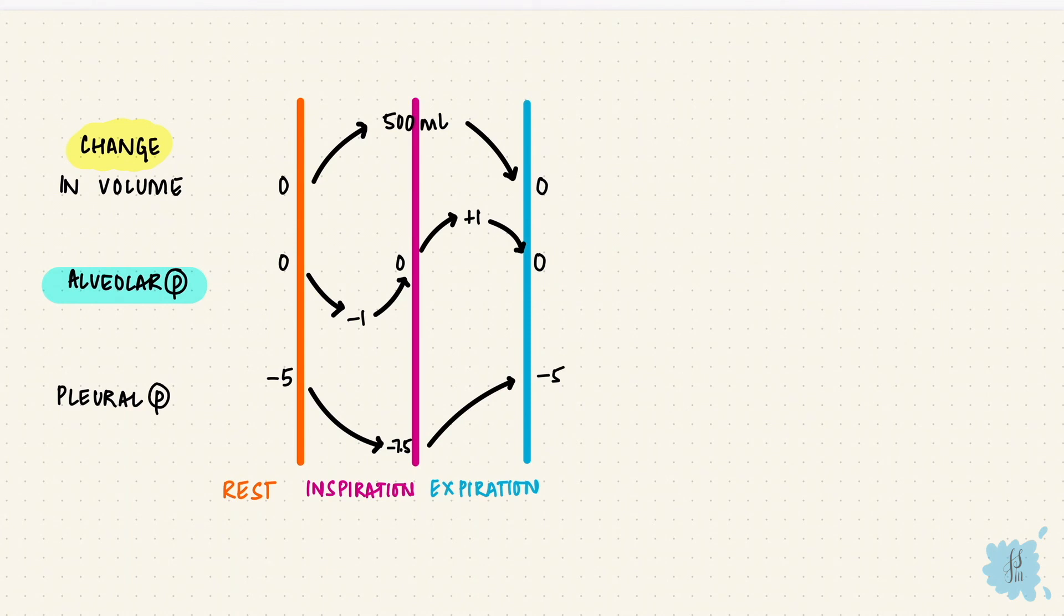But there's one more pressure, the transpulmonary pressure. It's the alveolar pressure minus the pleural pressure. So if we take rest, end of inspiration, and end of expiration, at rest, you can see it's 0, minus, minus 5. That's plus 5 cm of water at rest.